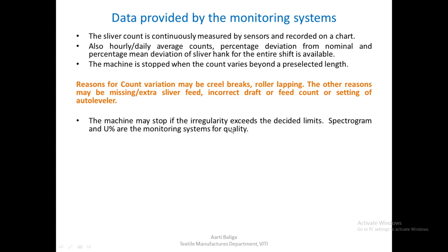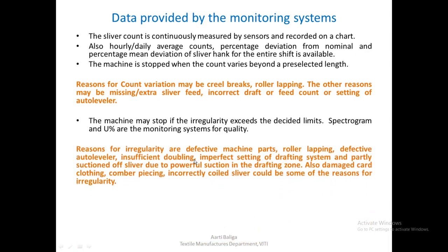The machine may stop if the irregularity exceeds the decided limits — if a high amount of irregularity is measured, it will automatically stop. The indicators for quality monitoring are spectrogram and U percentage. Reasons for irregularity may include defective machine parts, roller lapping, defective auto leveler, insufficient doubling, imperfect setting of the drafting system, partial suction of sliver due to powerful suction in the drafting zone, damaged card clothing, comber piecing, and incorrectly coiled sliver. Remedies for these will be discussed in this lecture.